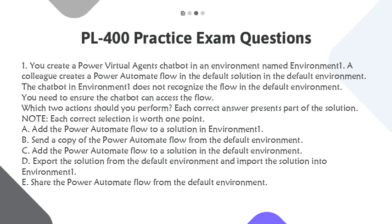Question 1. You create a Power Virtual Agents chatbot in an environment named Environment 1. A colleague creates a Power Automate flow in the default solution in the default environment. The chatbot in Environment 1 does not recognize the flow in the default environment. You need to ensure the chatbot can access the flow.